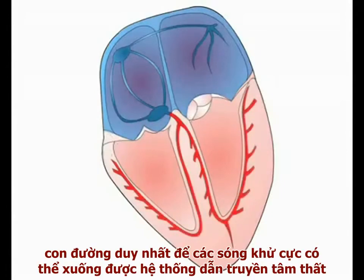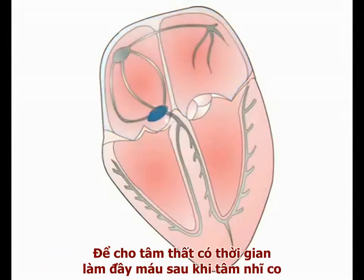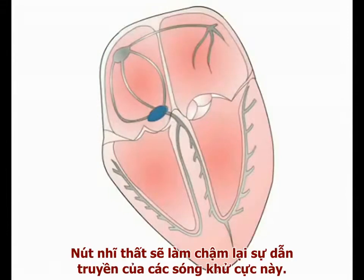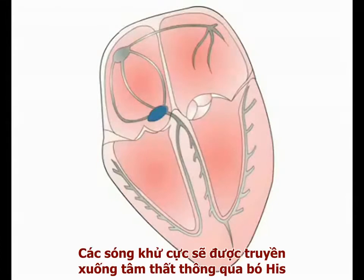In a normal heart, the only route by which the depolarising wave can enter the ventricular conducting system is through the AV node. In order to allow the ventricles to fill with blood following atrial contraction, the AV node initially delays the spread of the depolarisation wave. After this short delay, the depolarising signal is transmitted into the ventricles via the bundle of His.